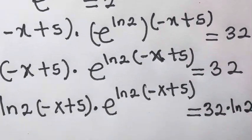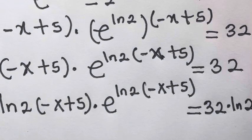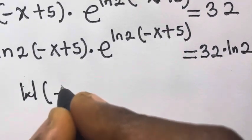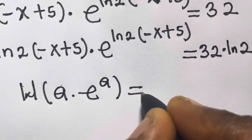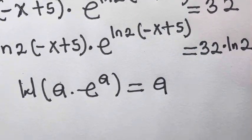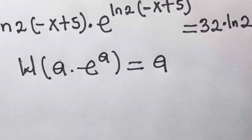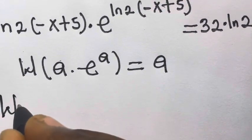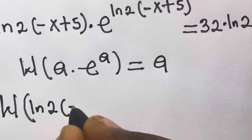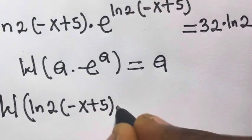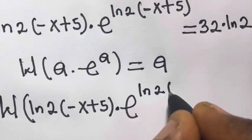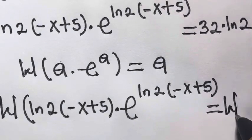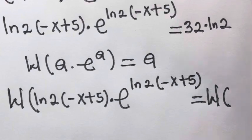So we have it like this. Remember that the Lambert W function of a multiplied by exponential a equals a. Applying this to the above, we apply the Lambert W function to both sides: Lambert W of ln(2) times minus x plus 5 times exponential of ln(2) times minus x plus 5 equals Lambert W of 32 times ln(2).